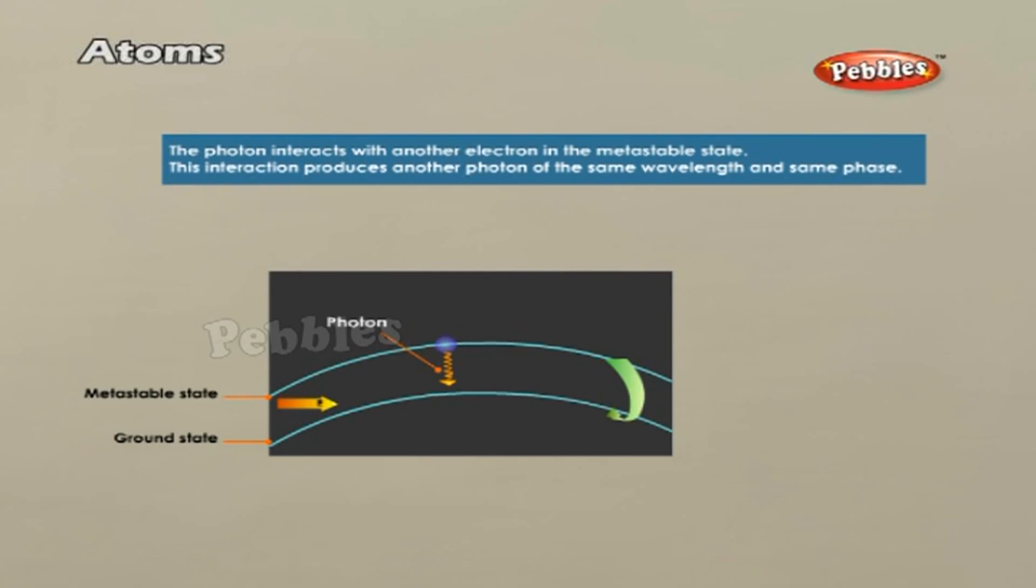In the case of laser light, the wavelength of each packet is almost the same. Also, the average length of the packet of waves is much larger. This means that there is better phase correlation over a longer duration of time. This results in reducing the divergence of a laser beam substantially.